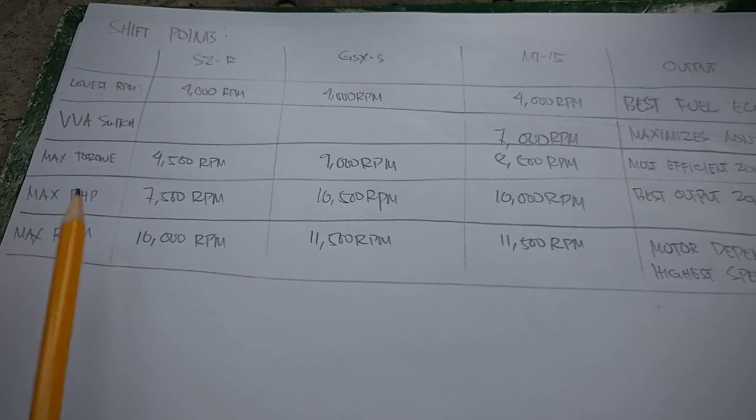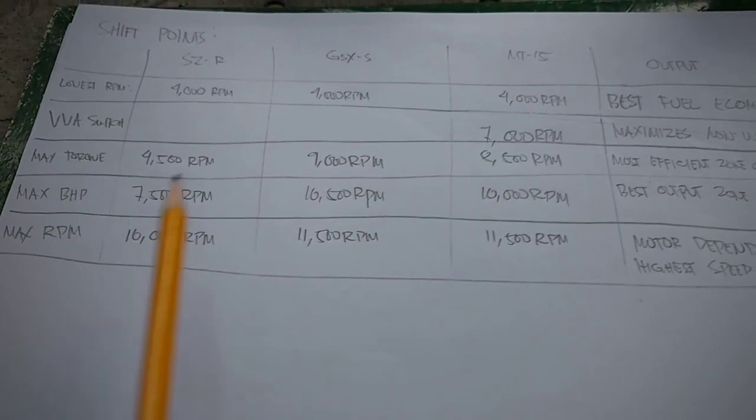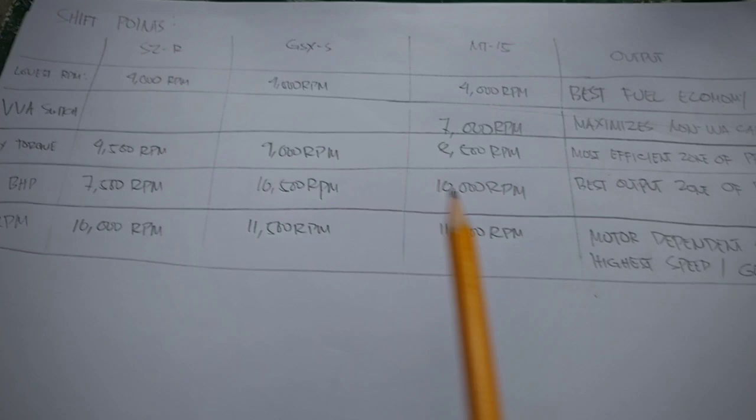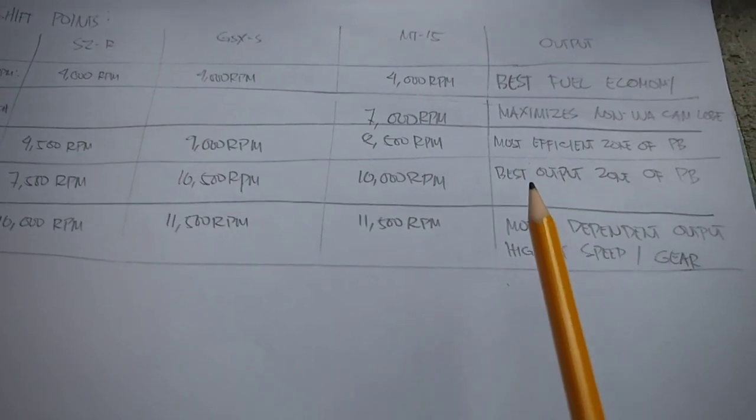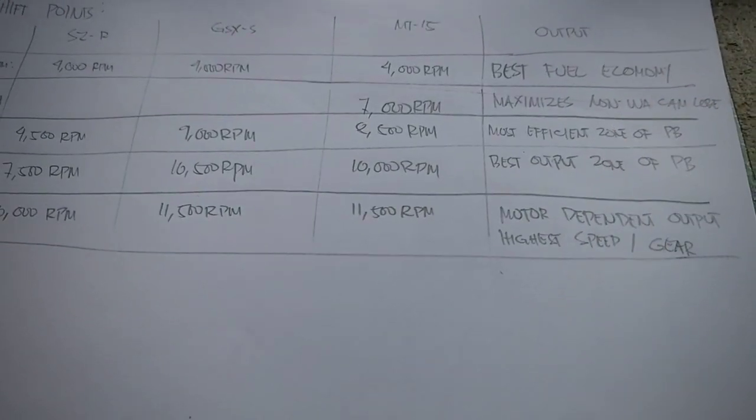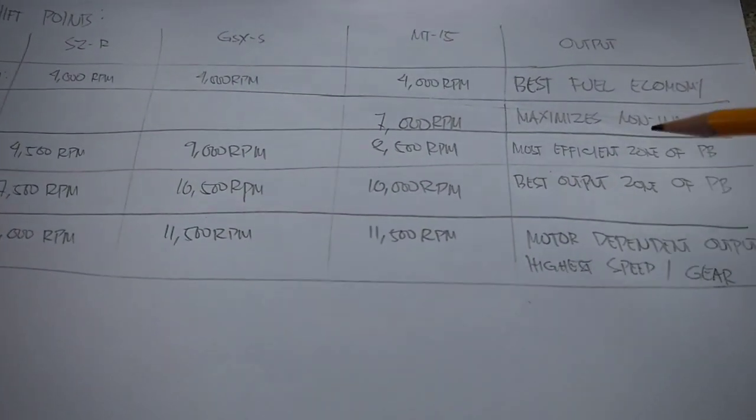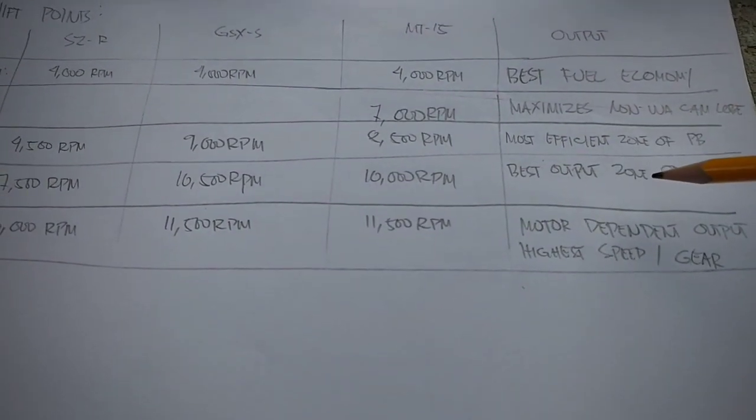So when do we shift for maximum horsepower? Pag nandito ka sa zone na ito, nasa best output zone ka ng motor mo. Not exactly the most efficient, but you make the most power.